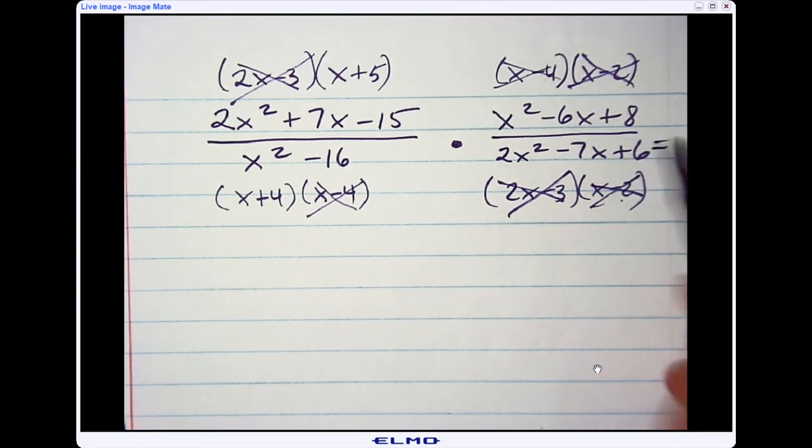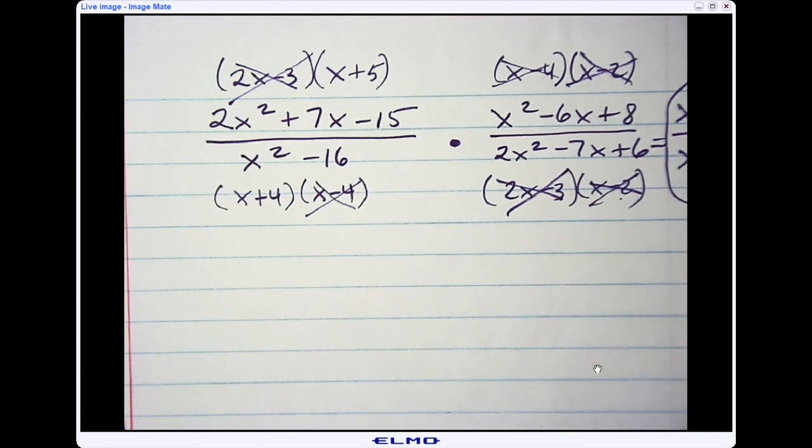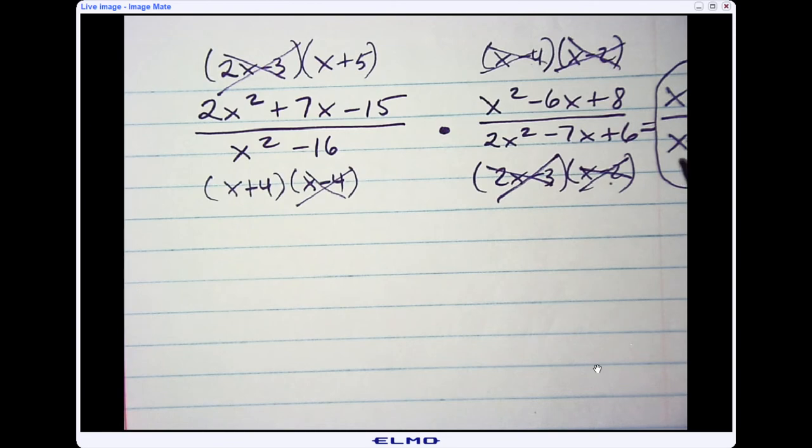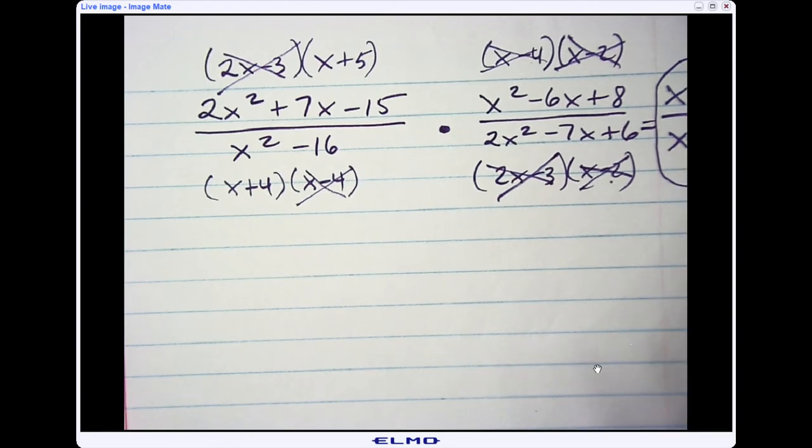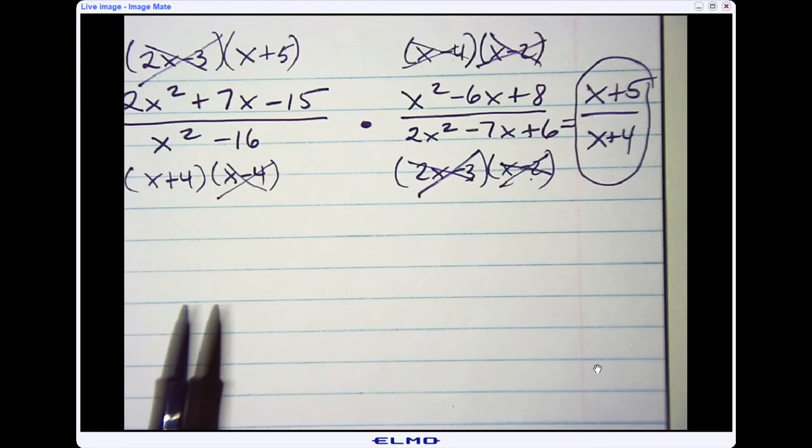And so if I'm multiplying these, all I have left is on the top, I have x plus 5, and on the bottom, I have x plus 4. And that would be my final answer. You cannot cross out these x's because they all have to have it in common, so that would just be my final answer of x plus 5 over x plus 4.